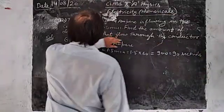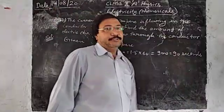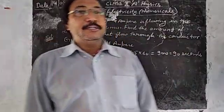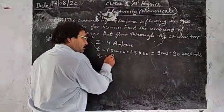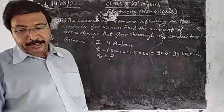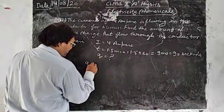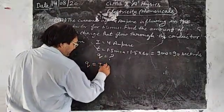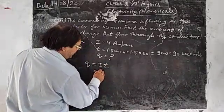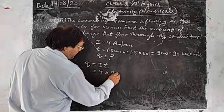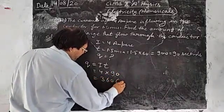Find the amount of electric charge that flows through the conductor. You have to find the electric charge Q. So you have the formula Q is equal to I×t. Put the values: I is equal to 4 into 90, that's 360.